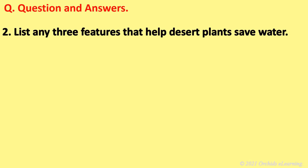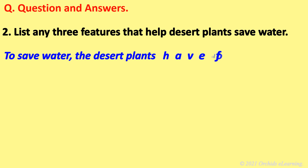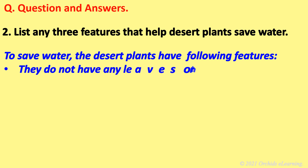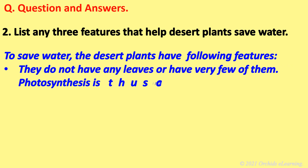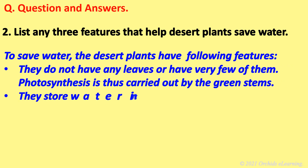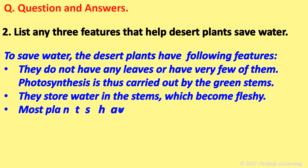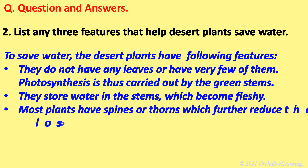List any three features that help desert plants save water. To save water, desert plants have the following features: they do not have any leaves or have very few of them, and photosynthesis is carried out by the green stems. They store water in the stems, which become fleshy. Most plants have spines or thorns, which further reduce the loss of water.